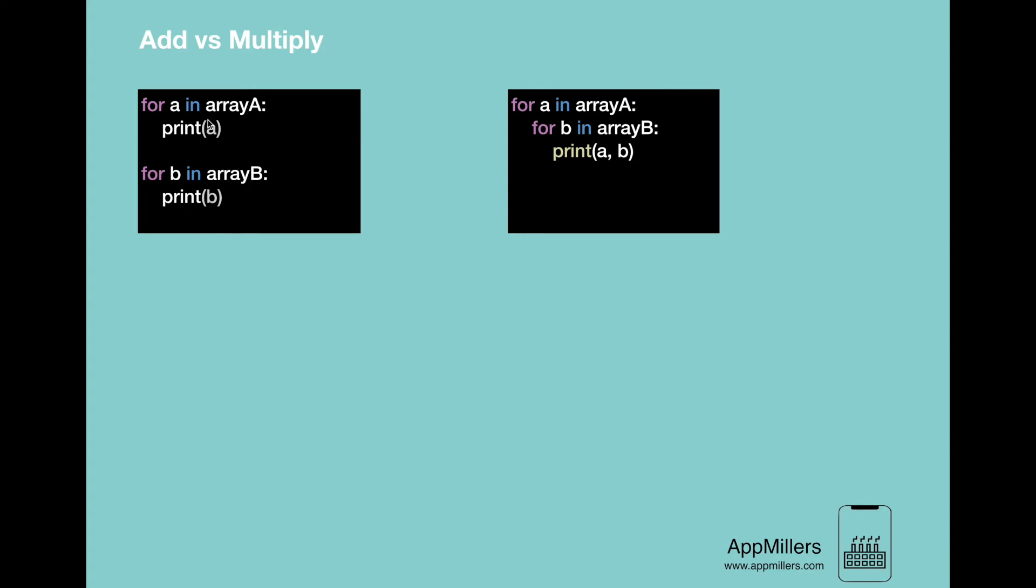In the example on the left, we do A chunks of work first, then B chunks of work. Therefore, the total amount of work is O(A + B).